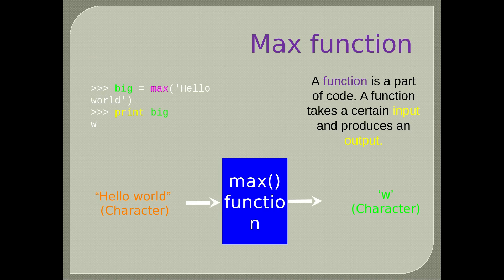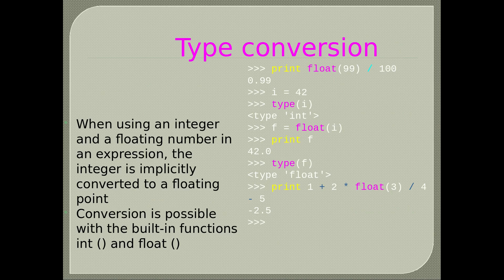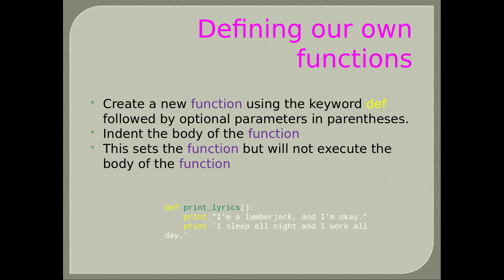Type conversion: when using an integer and a floating number in an expression, the integer is implicitly converted to a floating point. Conversion is possible with the built-in functions int() and float(). Defining our own functions: create a new function using the keyword def, followed by optional parameters in parentheses, then indent the body of the function. This defines the function but will not execute the body. For example, we define the print_lyrics function — if we do not call it, it does not perform its action.